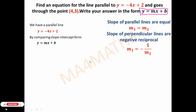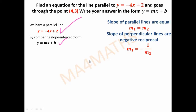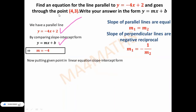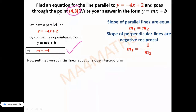By comparing, we find the value of m. The value of m will be -4. Now, putting the slope value and the given point into the slope-intercept form — we have the point (4, 3) and the slope we already found — we will substitute both into y = mx + b to find the value of b.